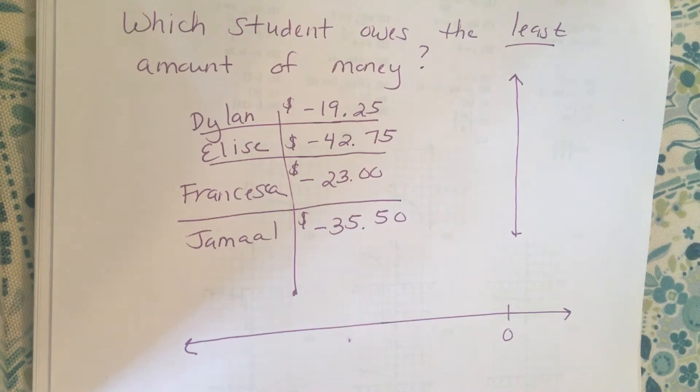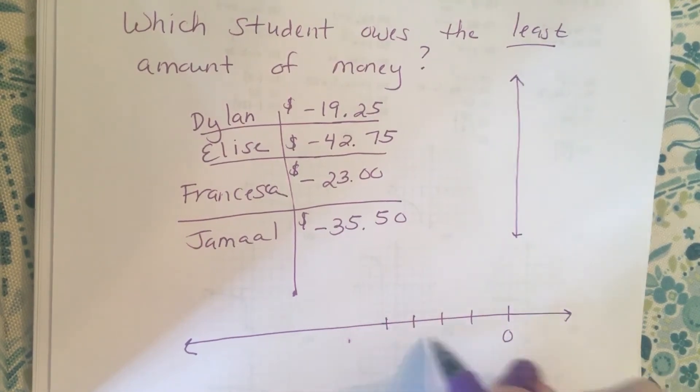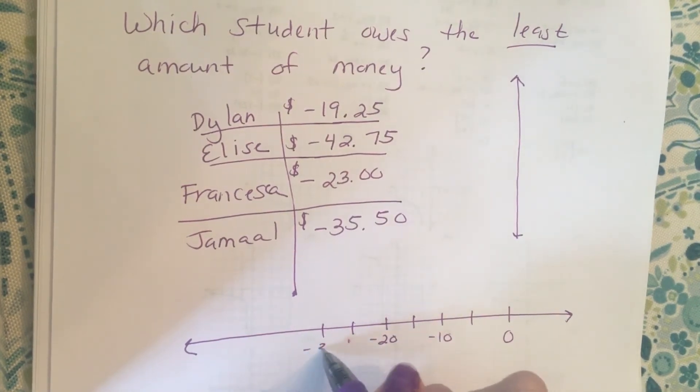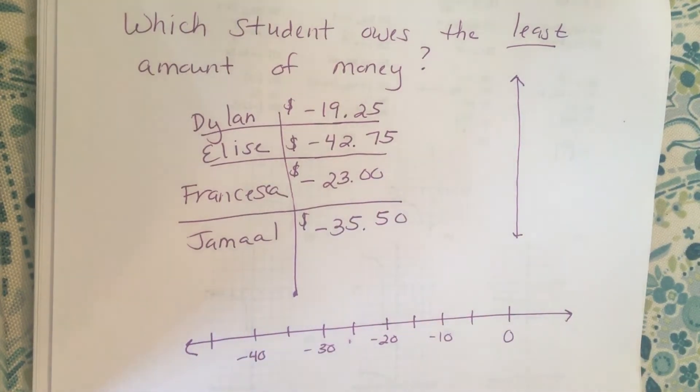I'm gonna put my zero here since most of my numbers are negative. And then it looks like negative 42, so maybe I'm gonna do 5, 10, 15, 20. This would be negative 10, negative 20, 25, negative 30, 35, negative 40, so that would be negative 45.